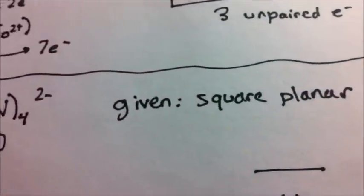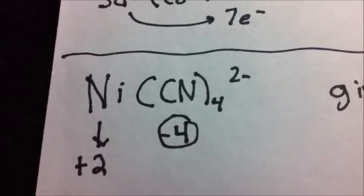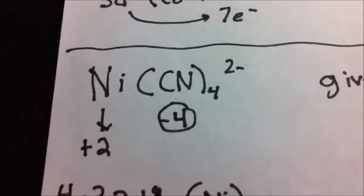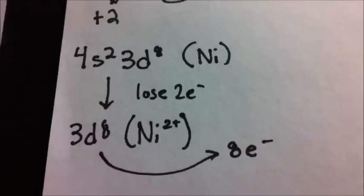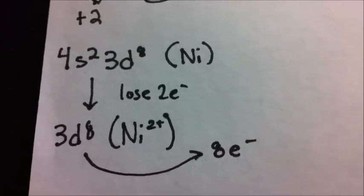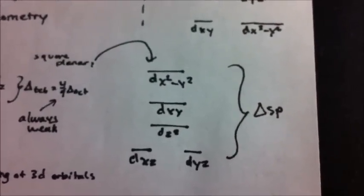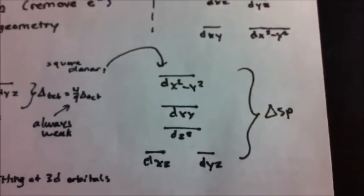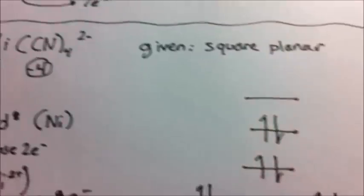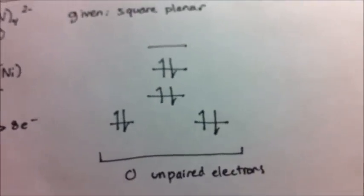For NiCN₄, we're given that it's going to be in a square planar shape. Each cyanide has a negative 1 charge, so 4 cyanides total give negative 4. With an overall charge of negative 2, our nickel oxidation state will be plus 2. The electron configuration is 4s², 3d⁸, and losing two electrons gives us 8 total electrons to fill in. In square planar form, there is a very large delta value from the top orbital to the bottom orbital — this is more or less always going to give us a low spin case. Filling in 8 electrons: 1, 2, 3, 4, 5, 6, 7, 8 — giving us 0 unpaired electrons total.